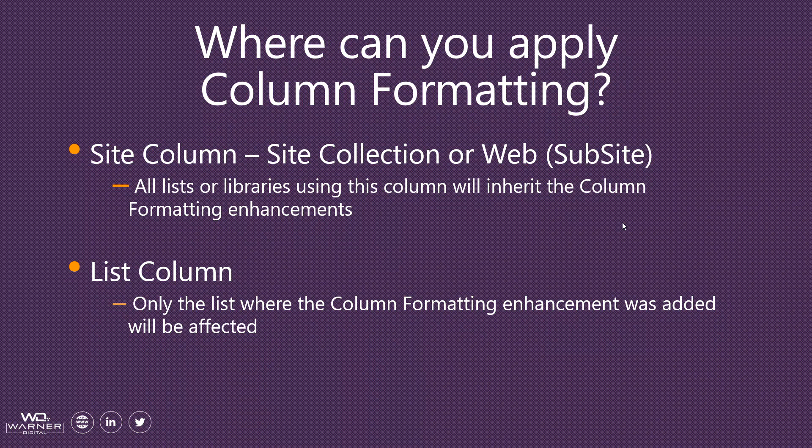You may use generically named site columns that are used for a variety of purposes, and depending on what content type or list they're used in, the use case is different. In that case, you can go directly to the list column itself within the list and scope the column formatting experience specifically to that list. Only that list will then inherit the experience defined by the column formatting. So you have two options for where you can apply it.